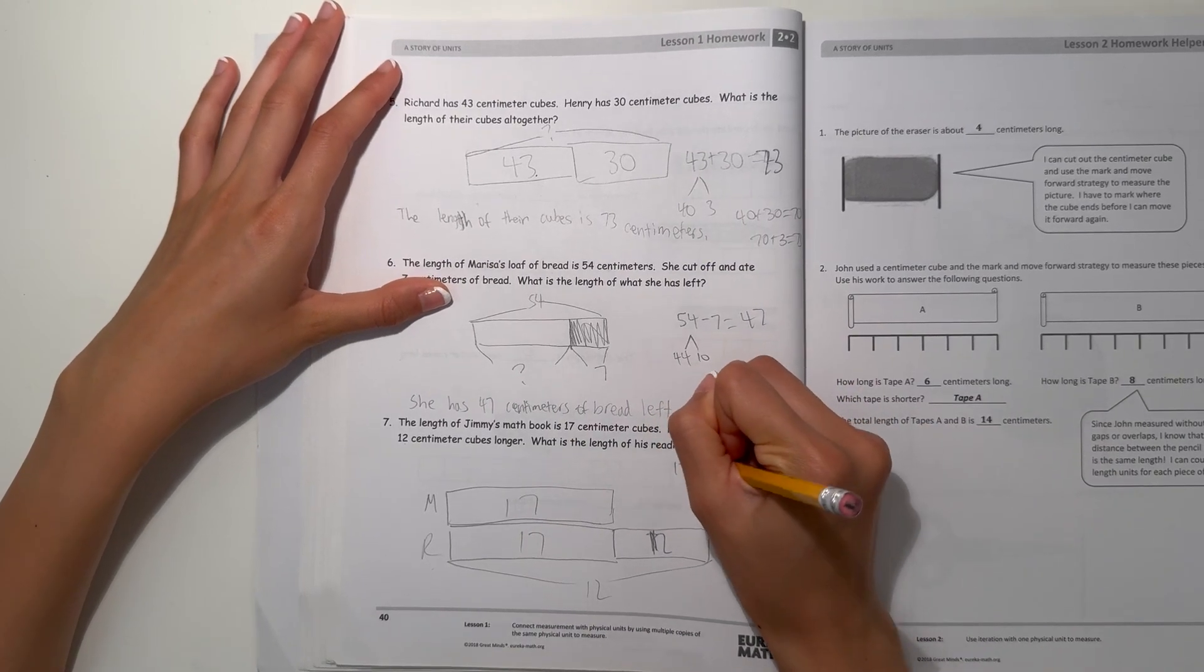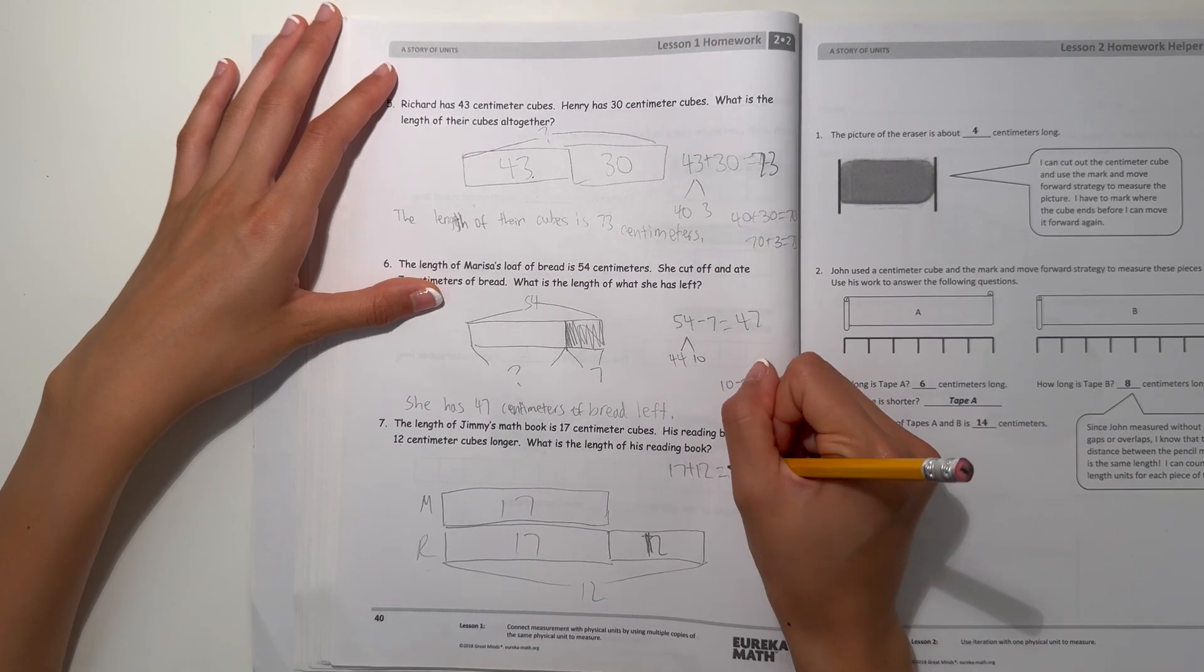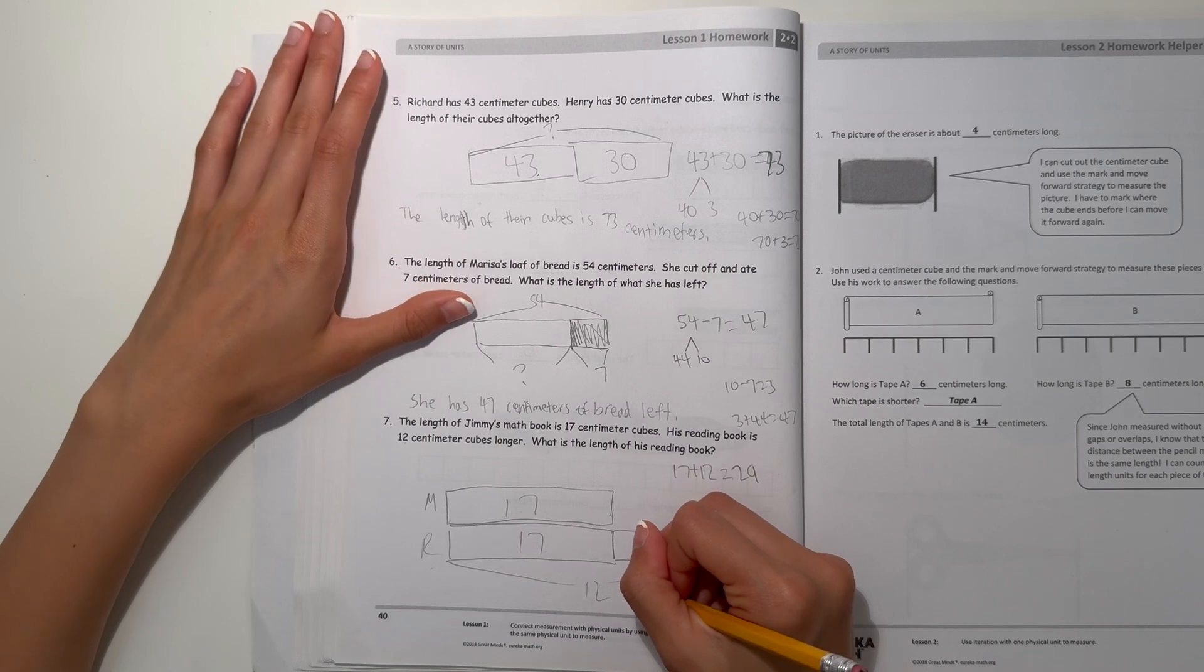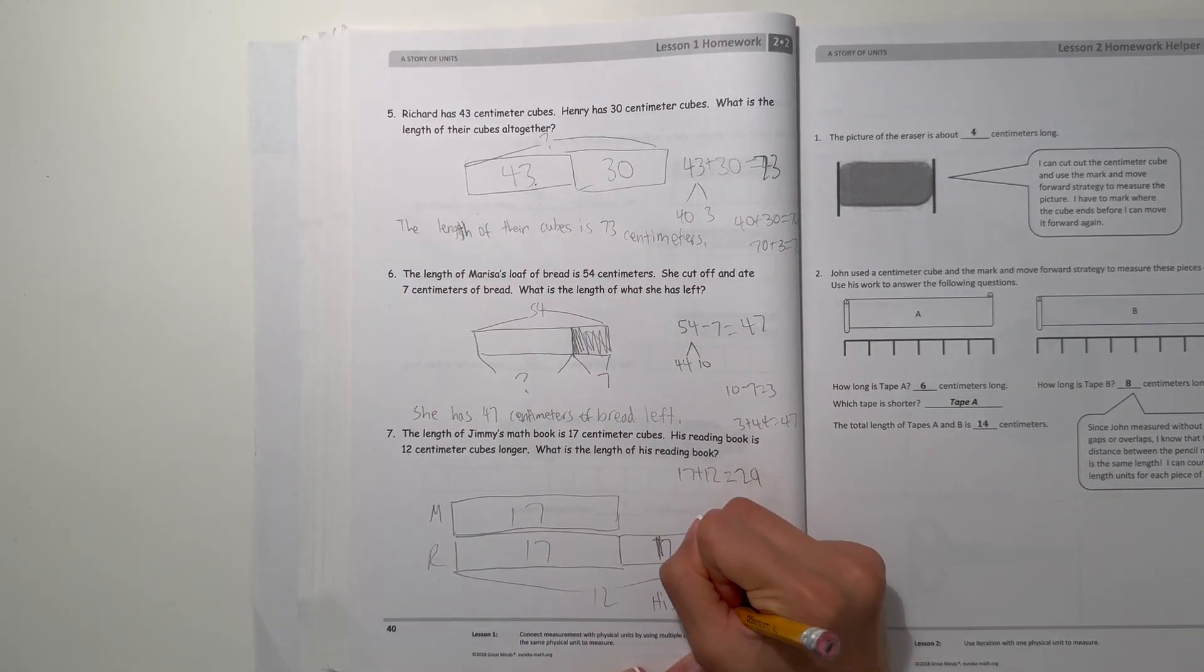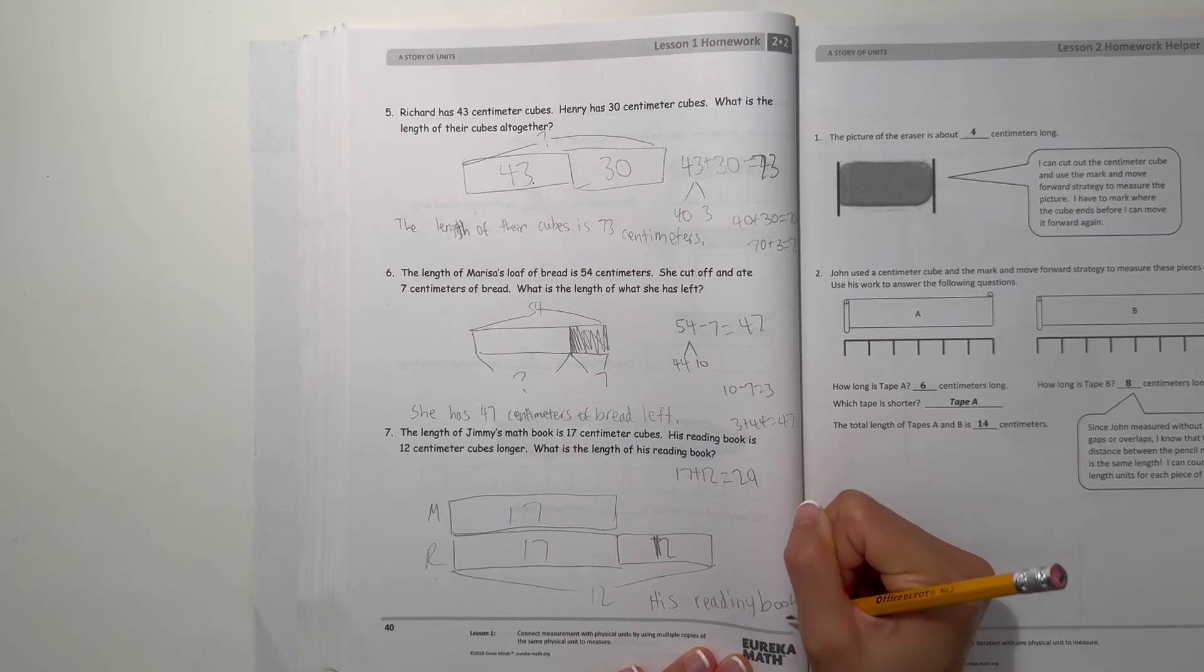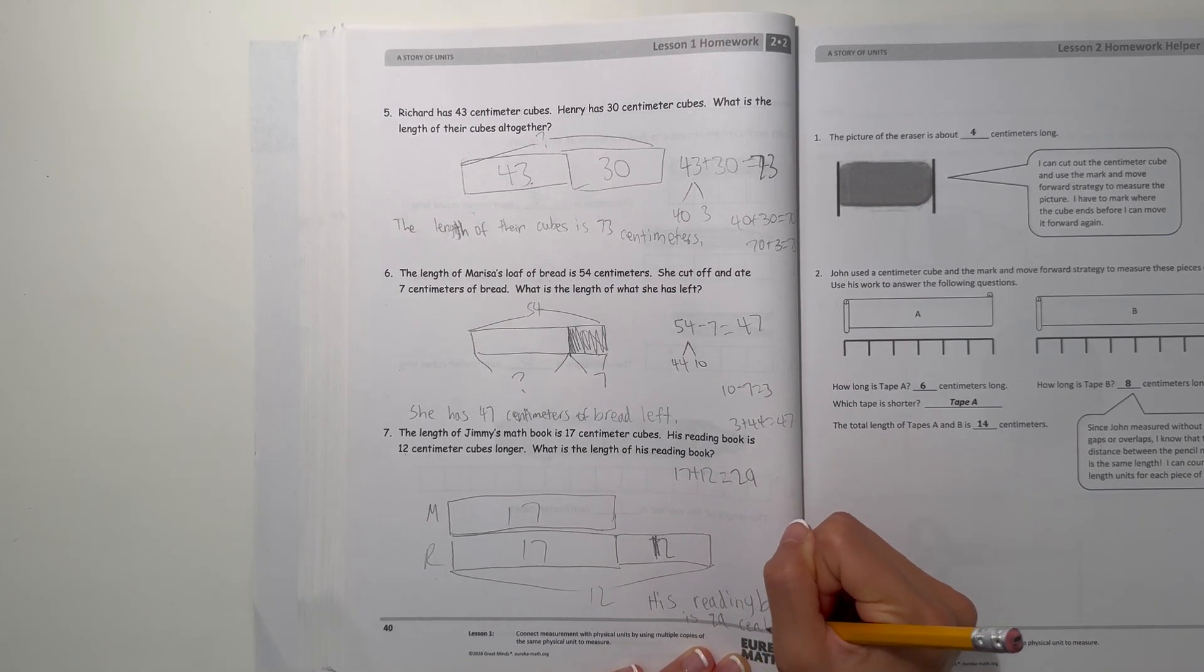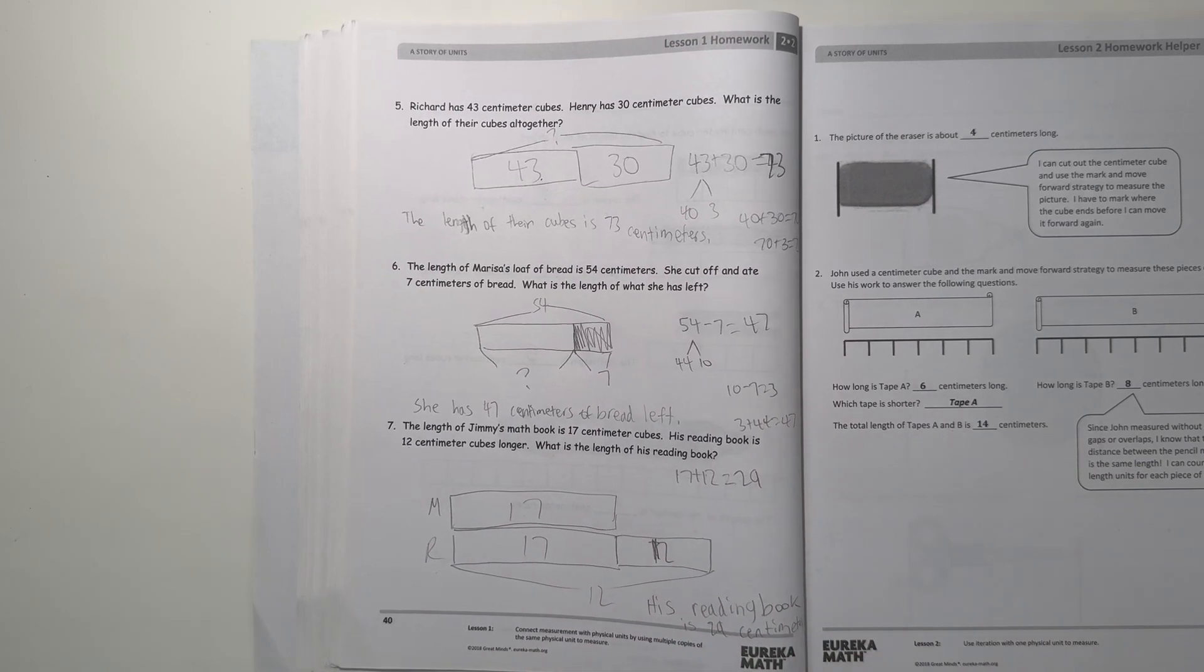We do 17 plus 12, which is two tens and nine ones, which is 29. So 17 plus 12 is 29. The length of his reading book is 29 centimeters.